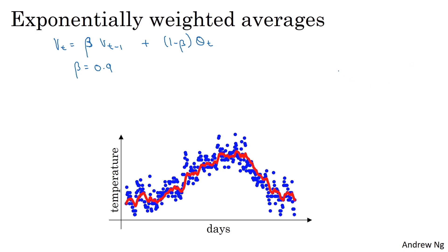It turns out that for reasons we'll go into later, when you compute this, you can think of Vt as approximately averaging over something like 1 over 1 minus beta days temperature. So for example, when beta equals 0.9, you could think of this as averaging over the last 10 days temperature. And that was the red line.